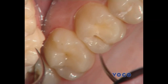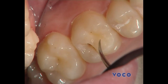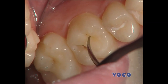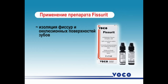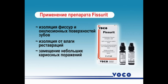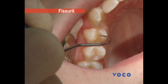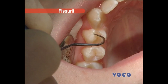Grandioseal can be used to fill small defects in the hard tissue of the teeth. Fissure-it is a light-curing sealant that is highly stable and forms a strong bond with enamel. The material is intended for isolation of fissures and occlusal surfaces of teeth in order to prevent caries, moisture isolation of composite and cement restorations, replacement of small carious lesions, or fixing orthodontic appliances such as brackets.